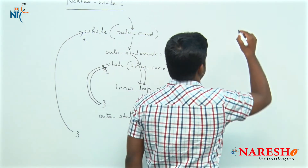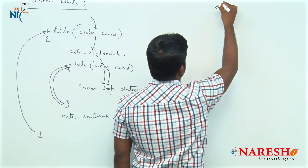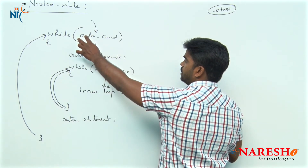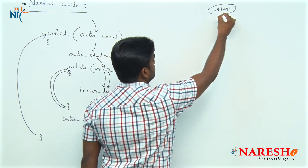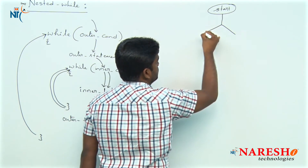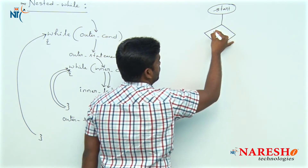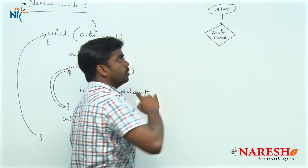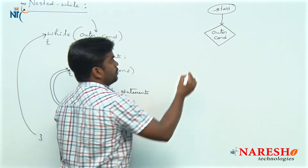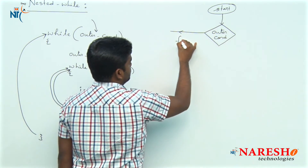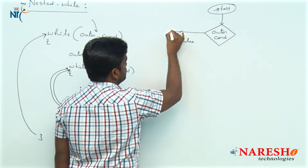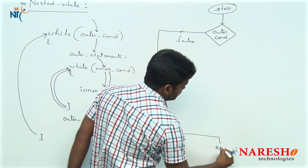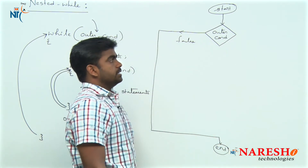Now look at the flowchart — how to write it. First it will start, and the first thing it checks is the outer condition. This is the outer condition box, and for every condition two options are there: true or false. If it is false, directly the control will move to end — it will terminate. That is the flow if the outer condition has failed.